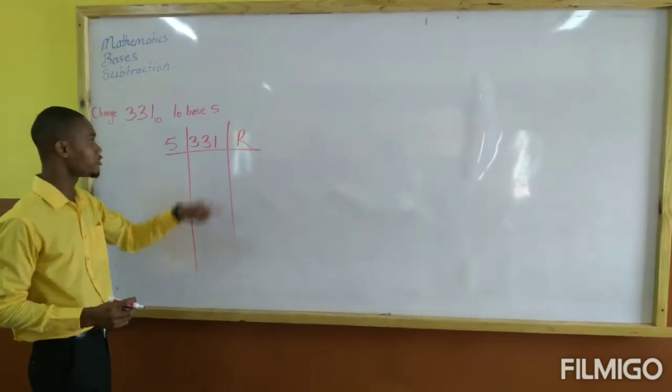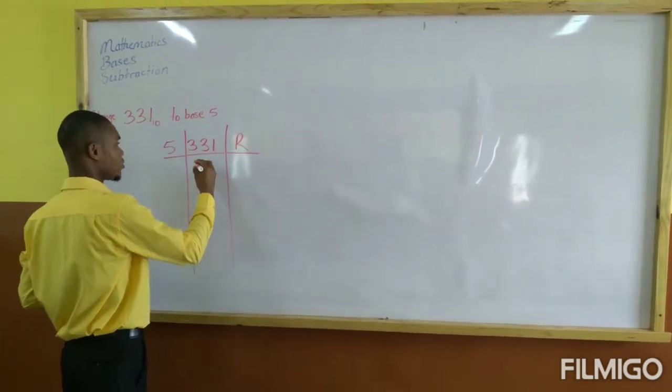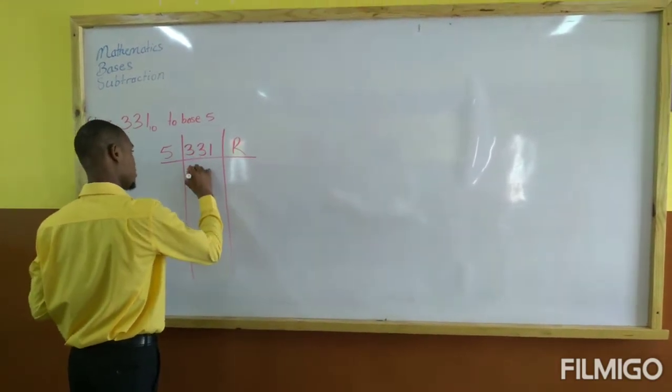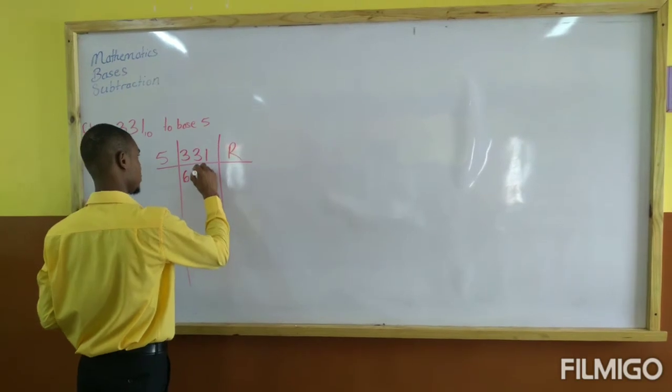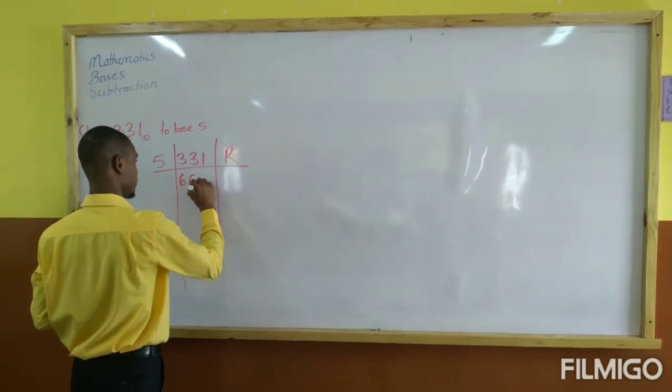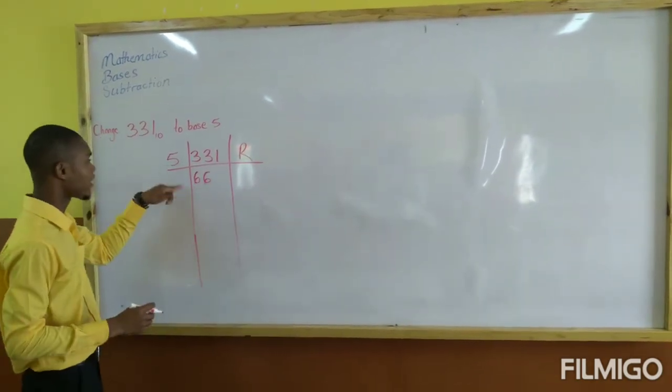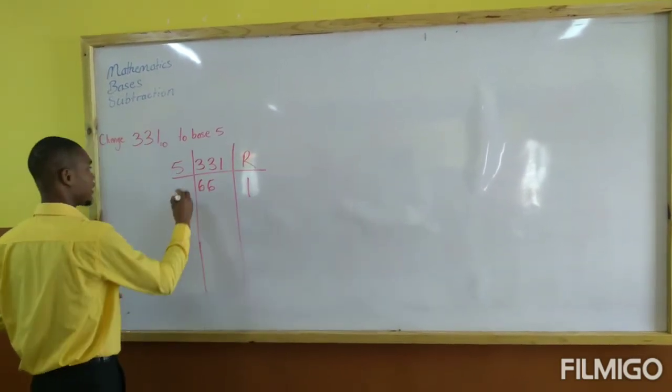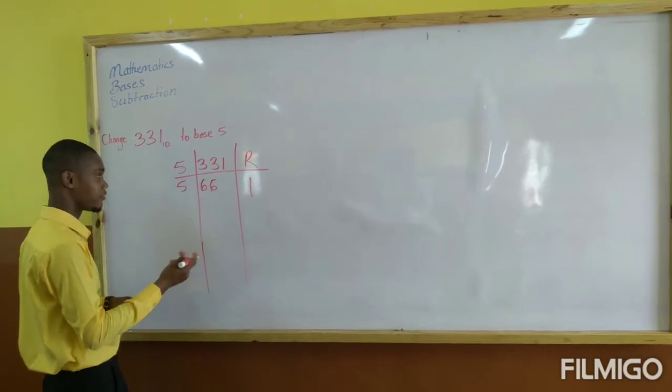So 5 into 331, you would work that out. That would be 66. So 5 times 66 would give you 330, and you would put your remainder over here which is 1. Then you divide 66 by 5.